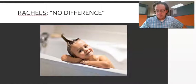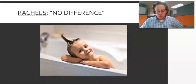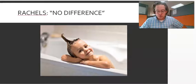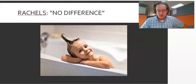One evening while the child is taking a bath, Smith sneaks into the bathroom and drowns the child. He actively kills this child in order to gain a large inheritance.